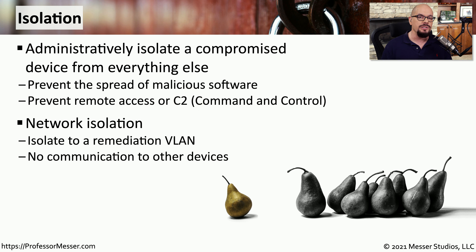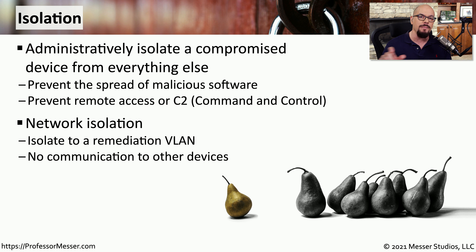We often use isolation if someone's trying to connect to the network and does not have the correct security posture on their device — perhaps they've not updated to the latest antivirus signatures. Their device will be put on a separate remediation VLAN that would give them access to update the signatures, and once those signatures are updated, they are then allowed access to the rest of the network.